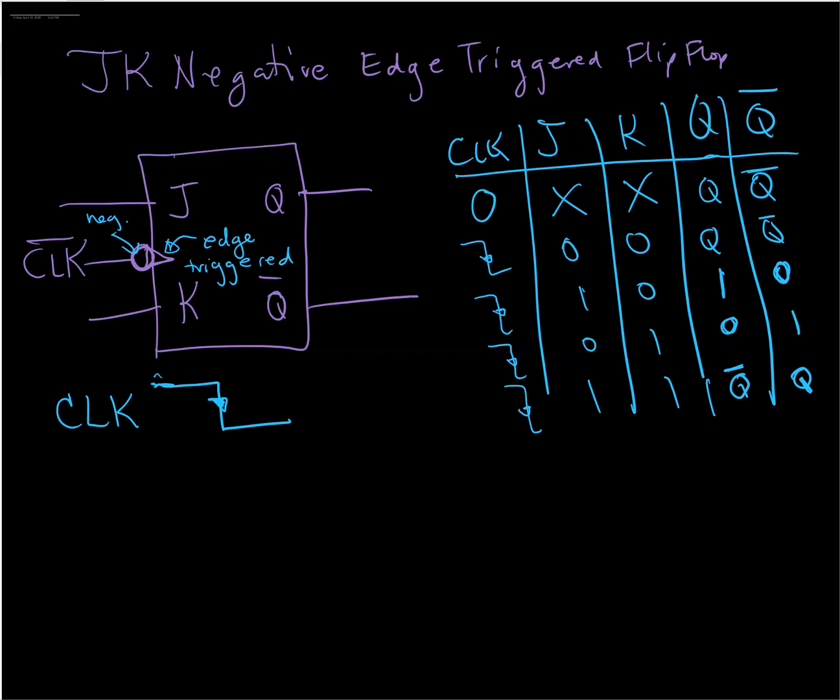So if I can label my states here, this is the no change state. And let me just shorten my output bar so they don't interfere with my table diagram. So that's the no change state. We have the set state, the reset state, and that last state is the toggle state. And we're going to make use of that in some future circuits.